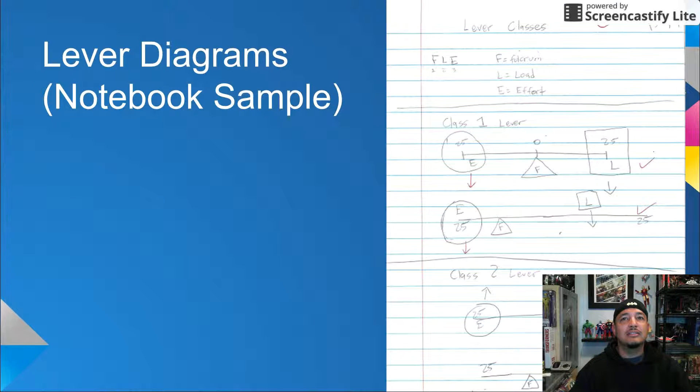Part two has students extending their understanding of the three lever classes, by first building two different lever systems for each lever class, and drawing diagrams for each system in their notebooks or on the duplication masters. This is one of the activities where I don't use the duplication masters, and I have students create diagrams in the notebooks instead. By the way, the reading selection that goes for part two is class two levers.